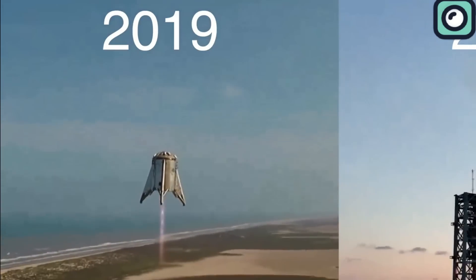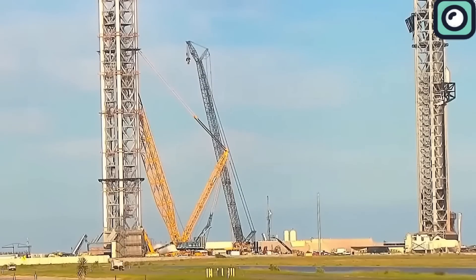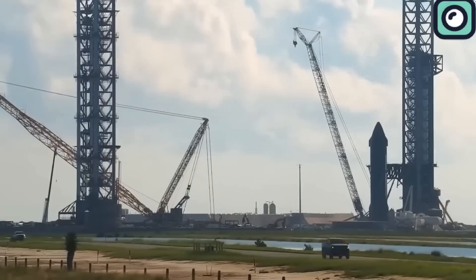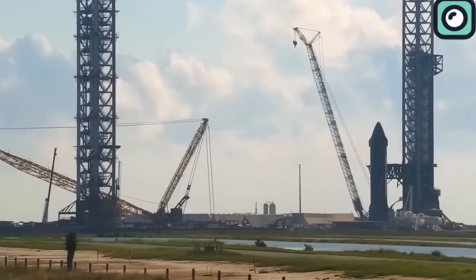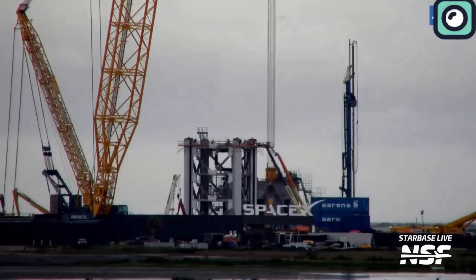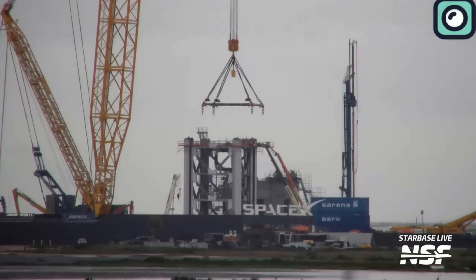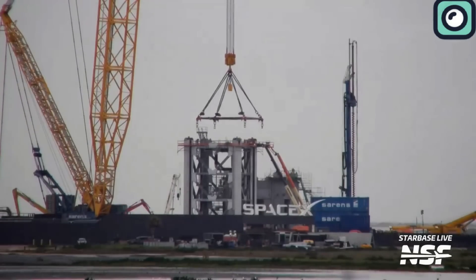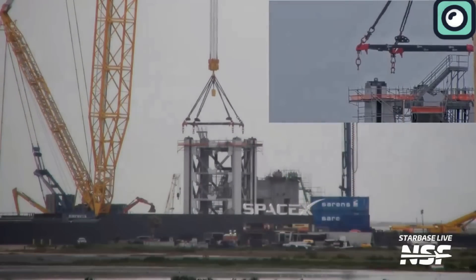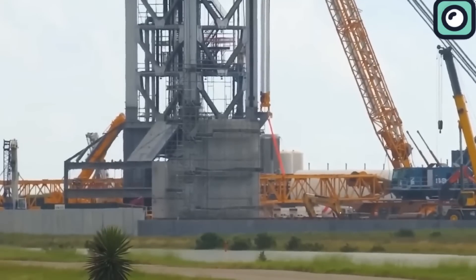However, as testing advanced, they resumed work on the launch infrastructure, including the tank farm for storing rocket fuel and oxidizers. By mid-2021, construction accelerated, and SpaceX installed key components like the integration tower, which uses massive chopstick arms to lift and stack Starship onto the booster.